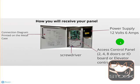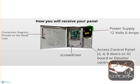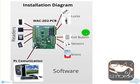When you receive your panel, one side shows a connection diagram for the panel. Depending on how many doors — 2, 4, or 8 doors, IO board, or elevator controller — we include a screwdriver for the terminal blocks. The power supply is 12V 6A, which is a practical money-saver because it provides four ports for mag locks, so you don't need to purchase a separate power supply for mag locks.